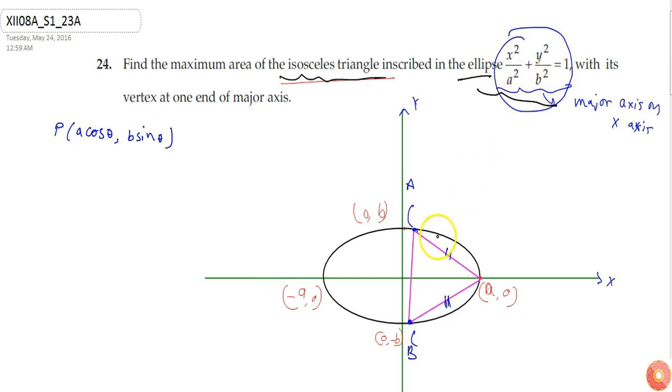If these two sides are equal, then the x coordinates of point A and point B will be equal, which will be a cos θ.